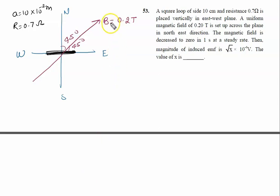The magnetic field decreases to zero, meaning initial magnetic field B₁ changes to B₂. B₂ is zero and time given is one second. We need to find the magnitude of induced EMF.